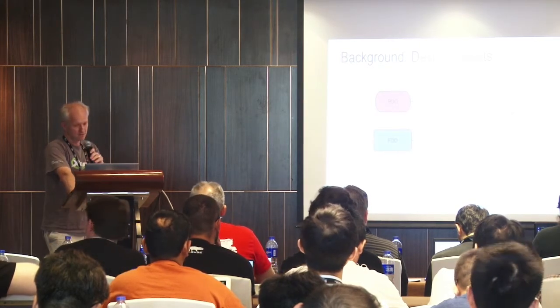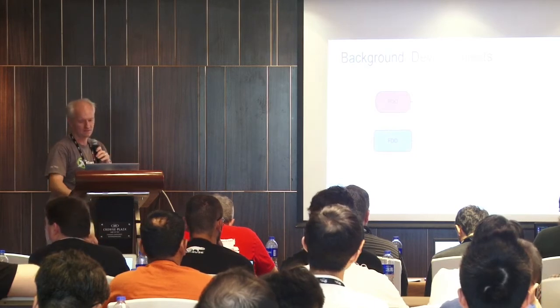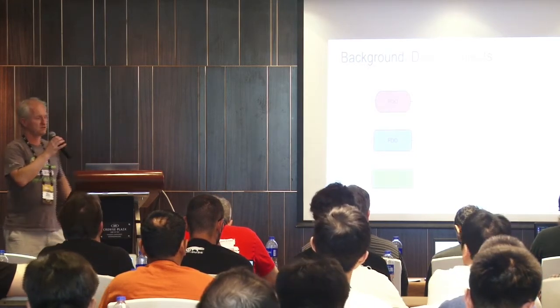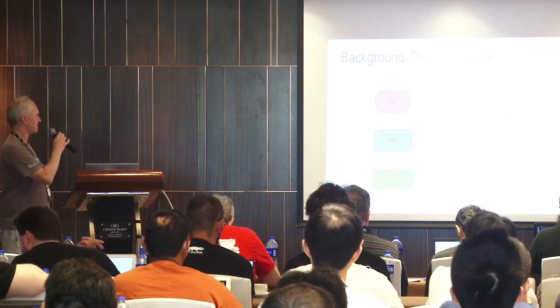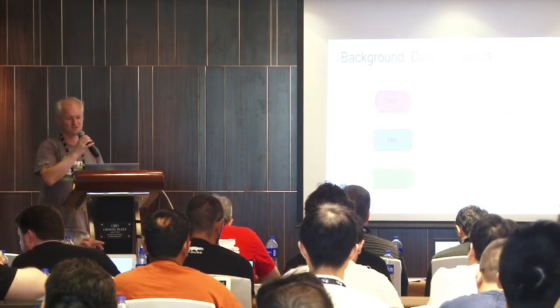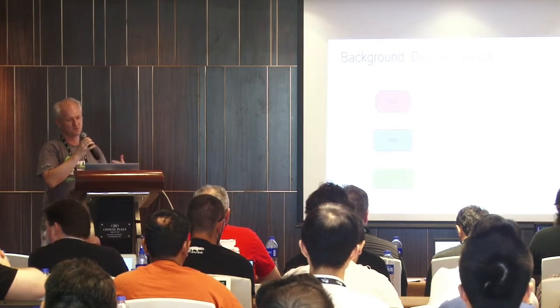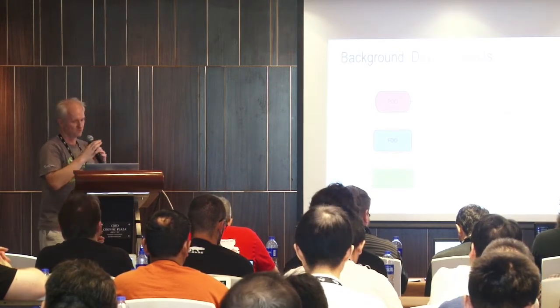Function device objects are created by drivers when they start to use physical device objects — I'll color these blue. And then there's something called a filter device object. Because FDO was already taken, it's called filter DO, which is not so catchy. Filter DOs interpose between FDOs and PDOs. I'll color those green.